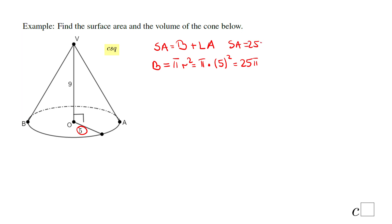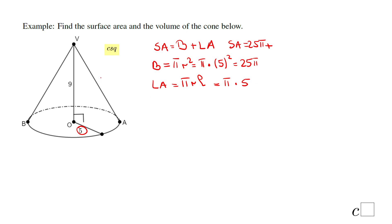The lateral area is pi r L. We do not know the slant height yet. But this altitude is 9 and the radius is 5, so we have a right triangle. Using the Pythagorean theorem: a squared plus b squared equals c squared, so 5 squared plus 9 squared equals L squared, giving 25 plus 81 equals 106, so L equals square root of 106.